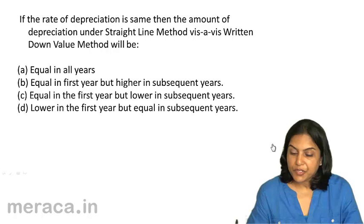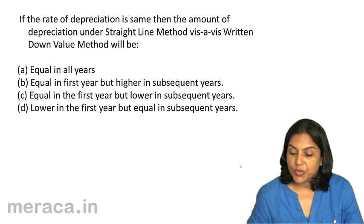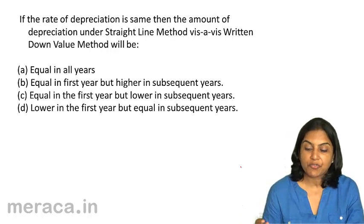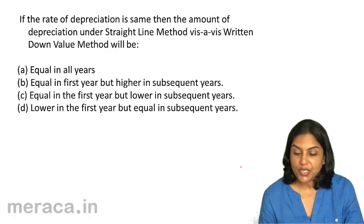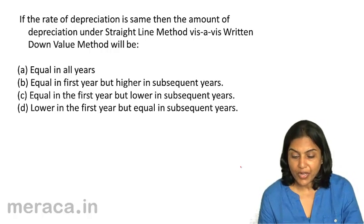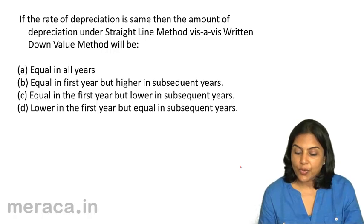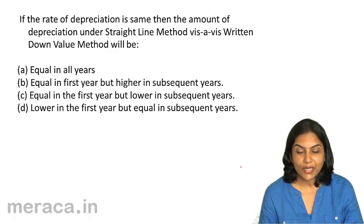Next question: if the rate of depreciation is the same, then the amount of depreciation under straight line method versus written down value method will be — A. equal in all years, B. equal in the first year but higher in subsequent years, C. equal in the first year but lower in subsequent years, D. lower in the first year but equal in subsequent years.